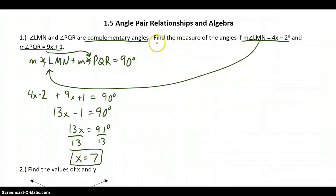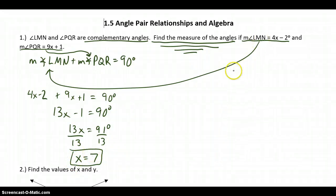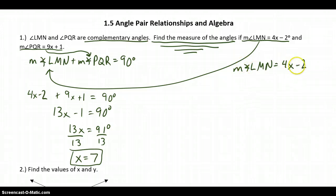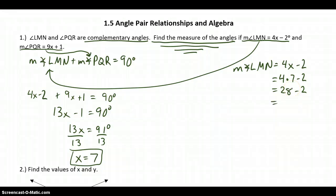So x equals 7. But if I reread my problem, I need to find the measures of the angles. I know that x is 7, and I know that the measure of angle LMN is 4x minus 2. If each x is worth 7, I substitute: 4 times 7 minus 2. That's 28 minus 2, which equals 26. So the measure of angle LMN is 26 degrees.